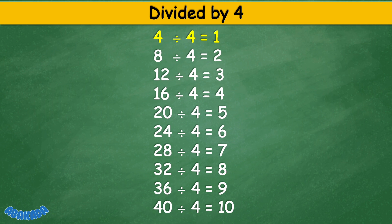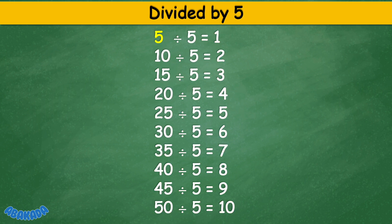Divided by 4: 4 divided by 4 equals 1, 8 divided by 4 equals 2, 12 divided by 4 equals 3, 16 divided by 4 equals 4, 20 divided by 4 equals 5, 24 divided by 4 equals 6, 28 divided by 4 equals 7, 32 divided by 4 equals 8, 36 divided by 4 equals 9, 40 divided by 4 equals 10.